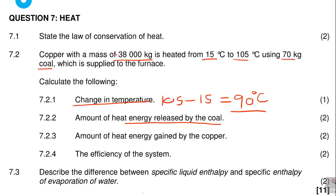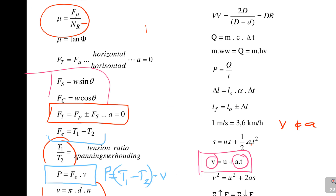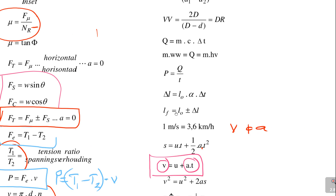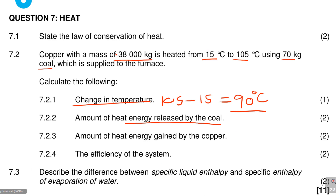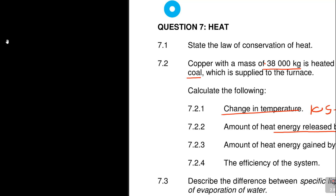90 degrees — that's the change in temperature. Now for the amount of energy released by coal: we're talking about coal here. Heat Q means heat. We could use Q = mcΔT, but we don't have the specific heat capacity of coal — we have the heat value of coal. So we use Q = m × HV, where HV is the heat value.